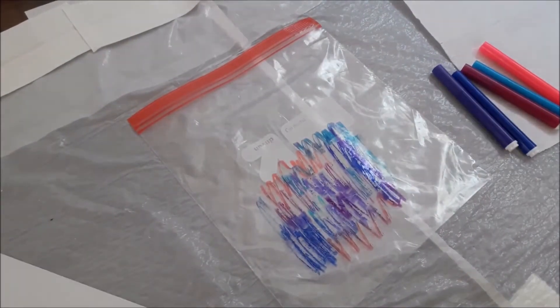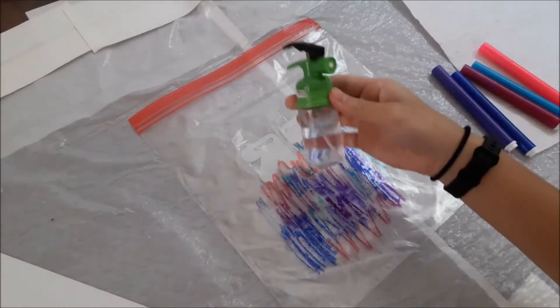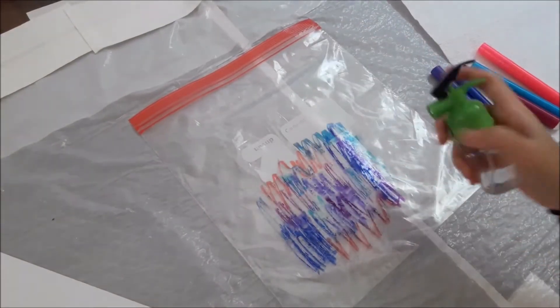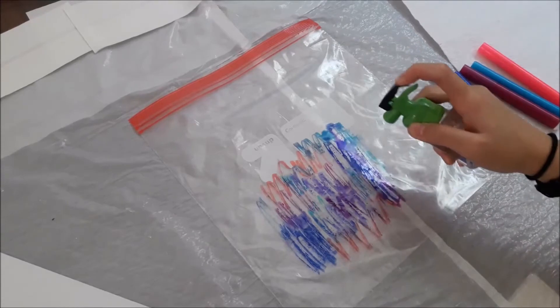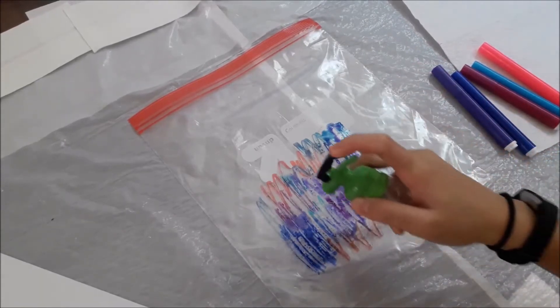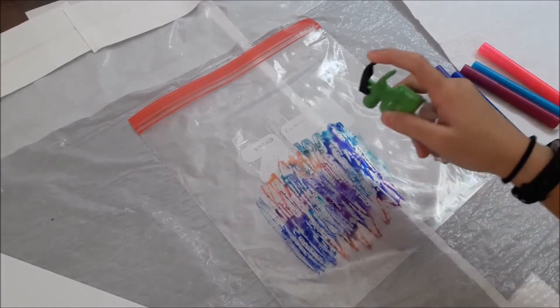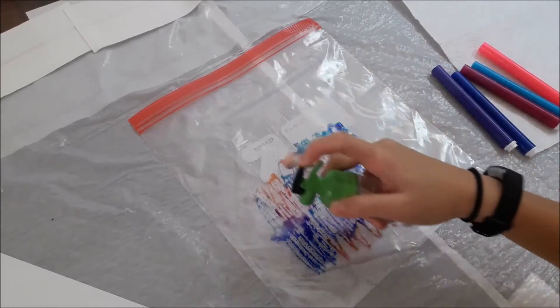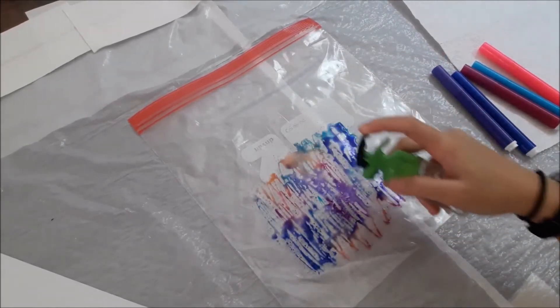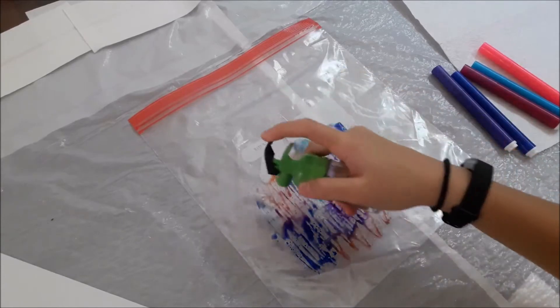Once you are all done drawing on your ziplock bag, the design that you want, you can take your water and your spray bottle and start spraying it onto the ziplock bag. Try to get all of the spots that you drew on wet so that it will go onto the paper evenly.